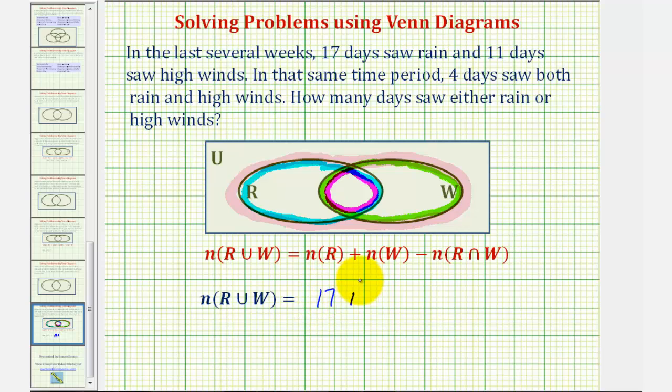add the number of elements in set W, or the number of days that saw high winds, which is eleven, and then subtract the number of elements in R intersect W, which represents the number of days that saw both rain and high winds, which is four.